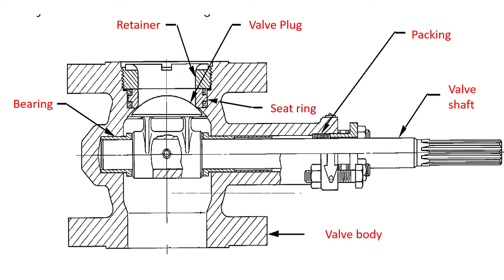Trim refers to the valve plug, seat, and internal surfaces of the valve body. The seat ring meets with the valve plug, and the main application of the seat ring is to provide a complete shut-off when the valve is in the closed position. The retainer — as the word itself suggests — locates and secures the seal or seat ring in the valve body, protecting and securing it in place.